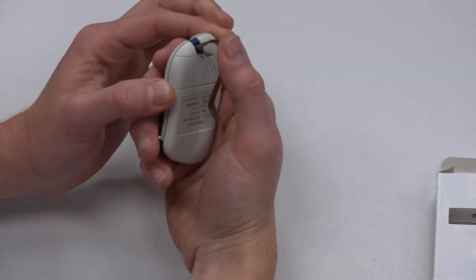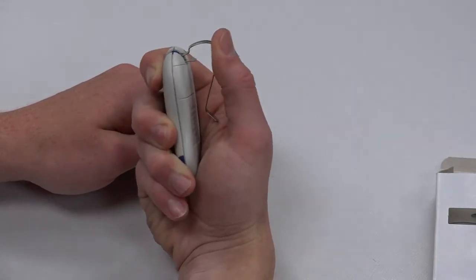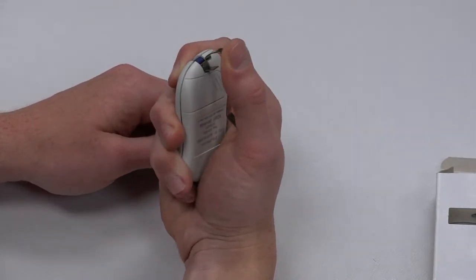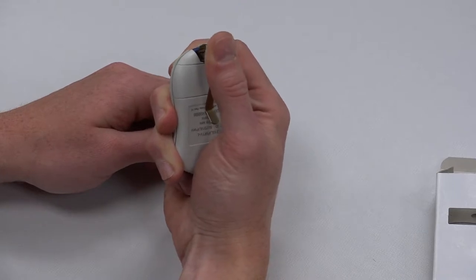So what you want to do is kind of take it like this to make it a little easier, take it like this and push downward and kind of wiggle it.